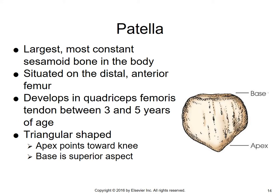A little bit about the patella: the patella is the largest and most constant sesamoid bone in the body, as it doesn't vary too much. It's situated on the distal anterior femur and develops in the quadriceps femoris tendon between the ages of three to five years. It is triangular shaped. Interestingly, the apex — its pointed part — actually points downward toward the knee area, while the base is its superior aspect.